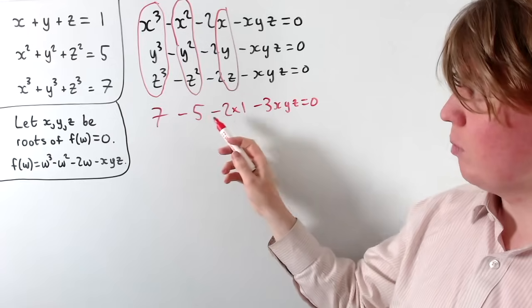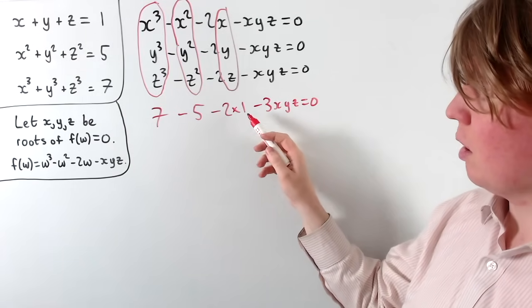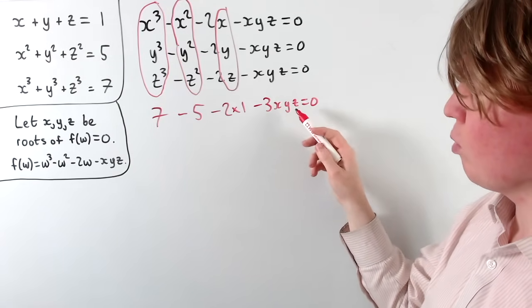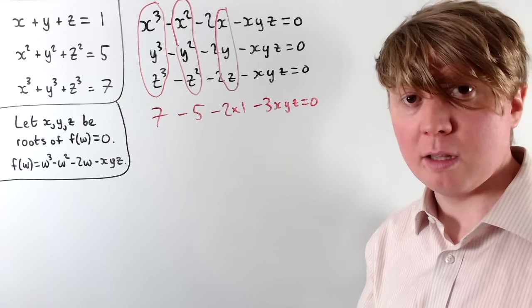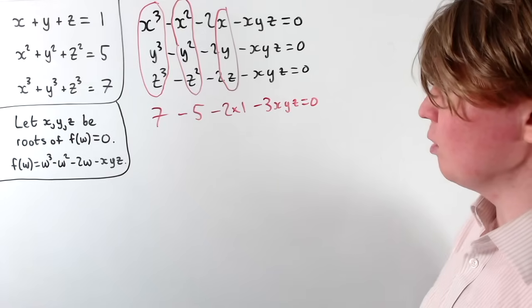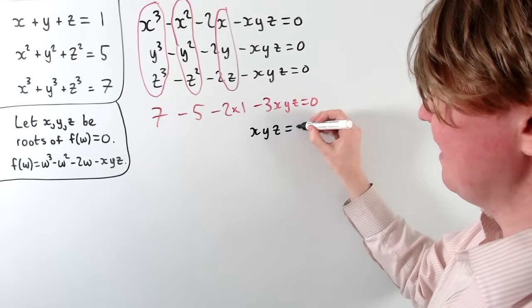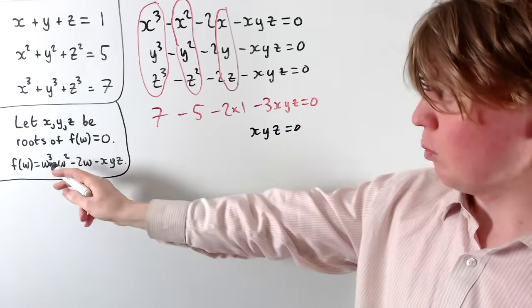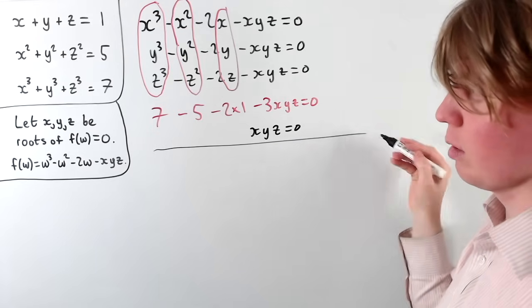Since 7 − 5 − 2 = 0, we get 0 = 3xyz, so xyz = 0. We've now completely determined what our cubic equation is.